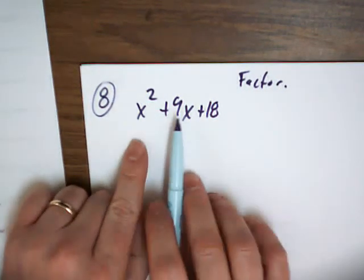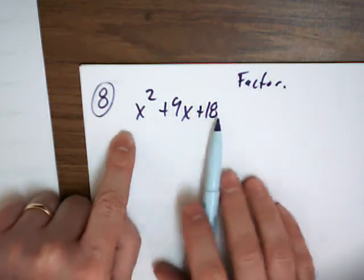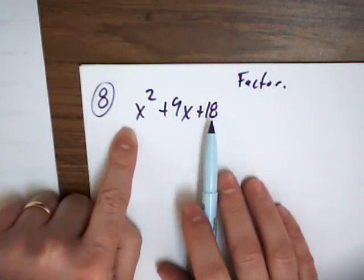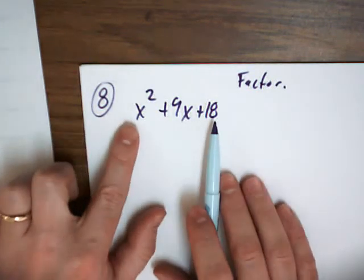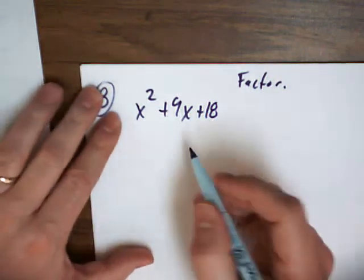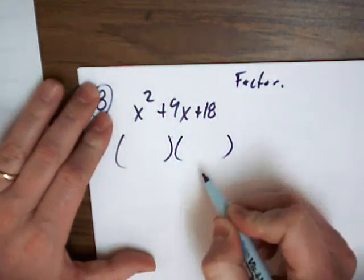But on a question like this, the AC method means that you take the A value and the C value and multiply them. So you don't have to use the AC method on this one. You just factor like you normally would.